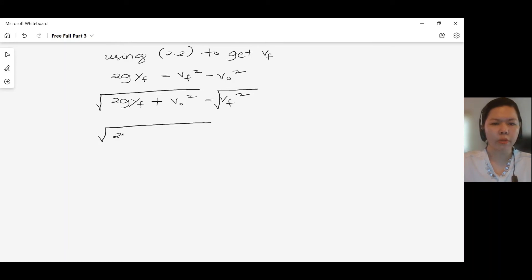Square root of 2 times negative, the G of Mars is 3.71 meters per second squared, times Y final is negative 7 meters, plus V0 is negative 1.2 meters per second squared, equals our V final.